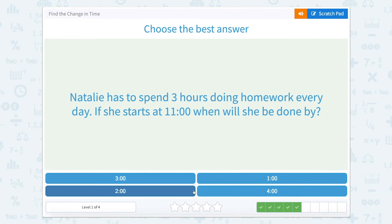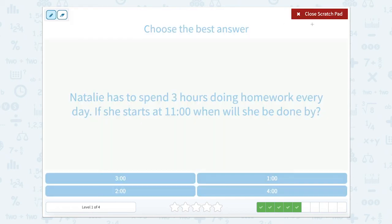Natalie has to spend three hours doing homework every day. If she starts at 11, when will she be done by? So we're starting at 11 o'clock, and she's going three hours. Your first instinct might say, well, I can do 11 plus three, and that gives me 14. But that doesn't quite work.